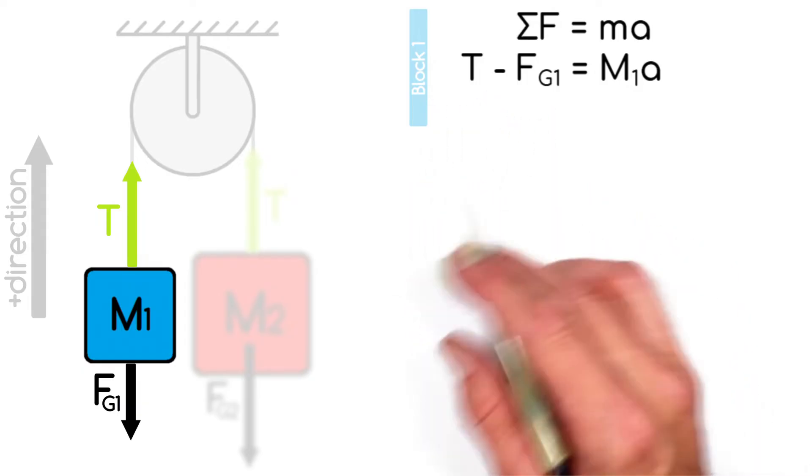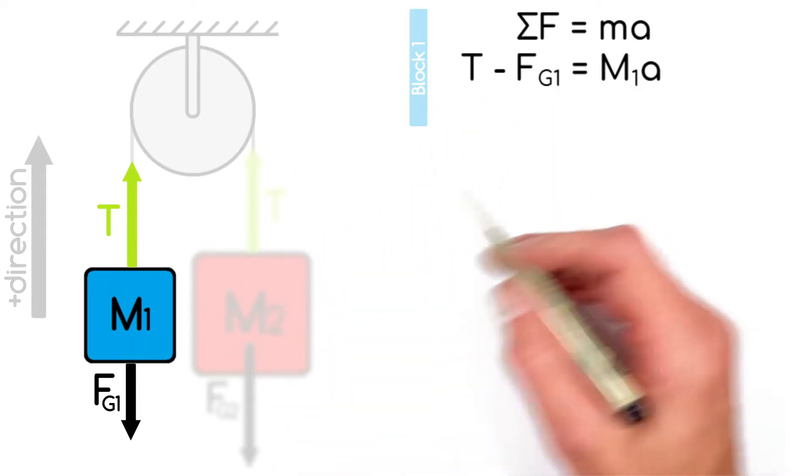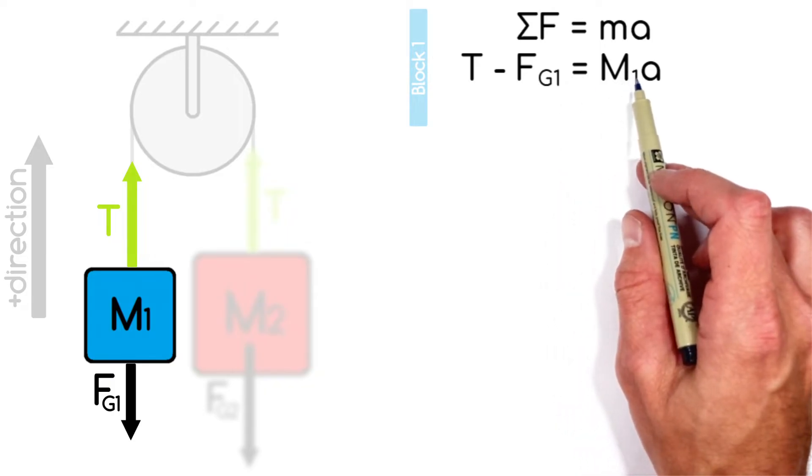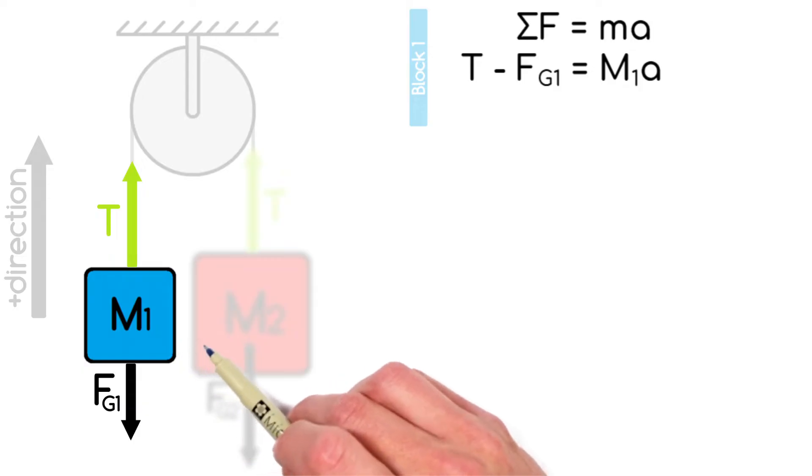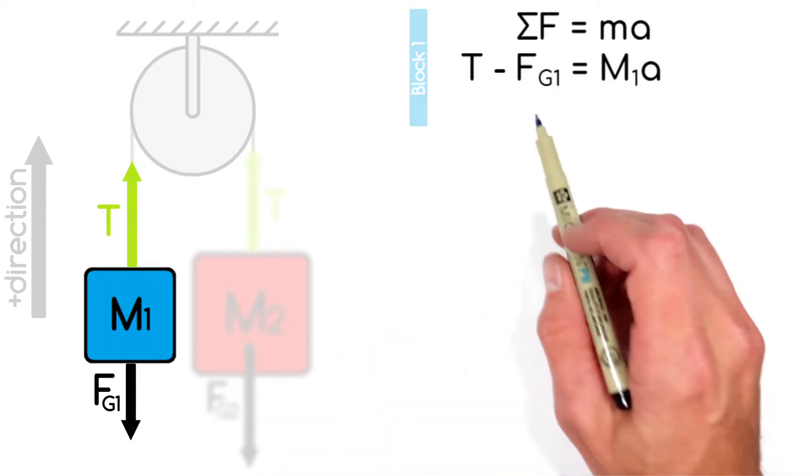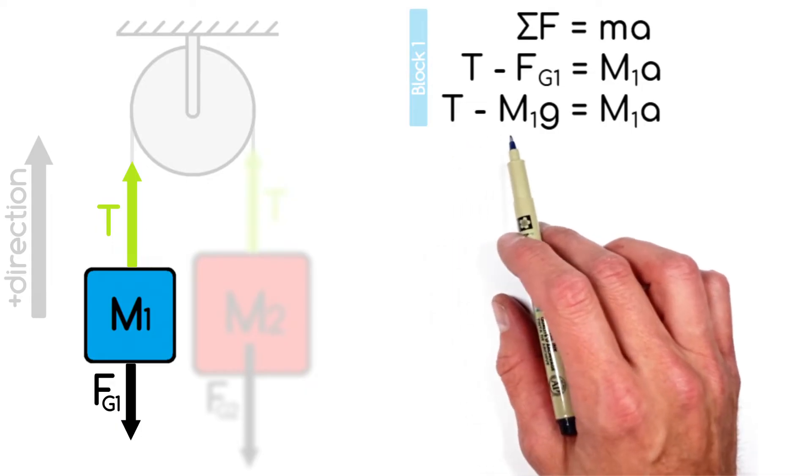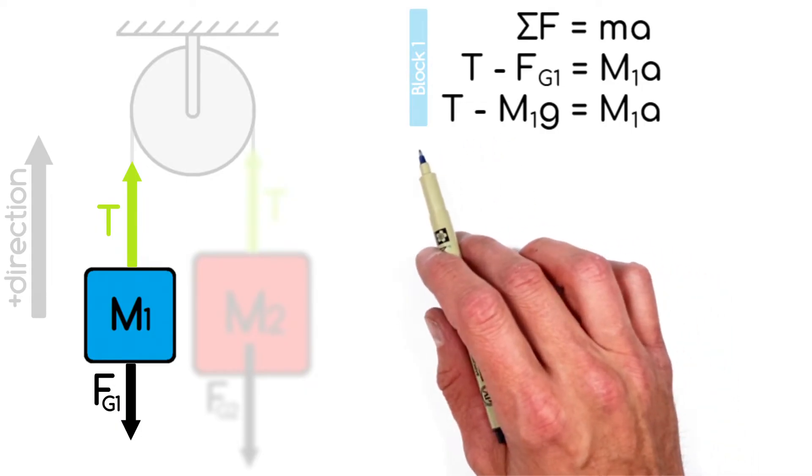And that net force is causing this mass, I'm going to call that M1, to accelerate at some rate a. Now we know the force by gravity is equal to an object's mass times the acceleration due to gravity, so you can expand out this equation a little bit, leaving us with this, a single equation with two unknowns.